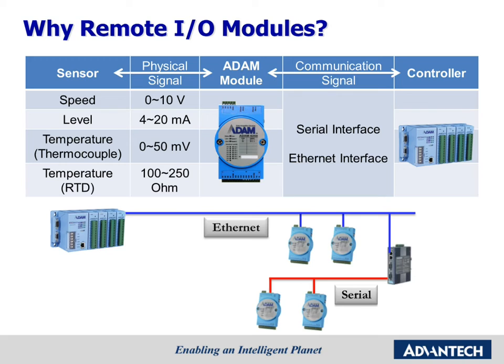Now let's see what is the use of Remote I/O modules. As shown in this slide, when the physical signal we want to measure is far away, we can use Remote I/O modules to get the signal from sensors and send it to the controller. The signal can be sent through serial or Ethernet interface. For ADEM input modules, they can detect the physical signal and return it to the controller through a serial or Ethernet interface. For ADEM output modules, they can receive the signal from controllers through serial or Ethernet interface and control end devices.